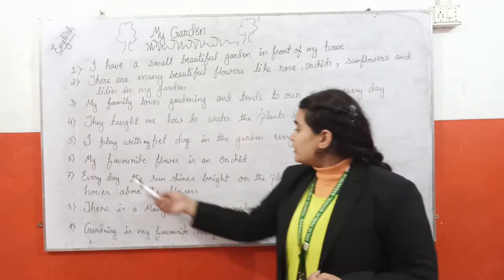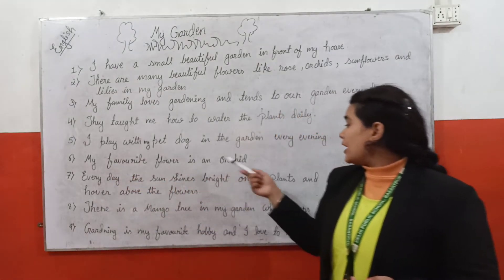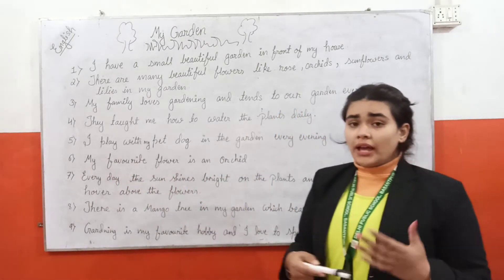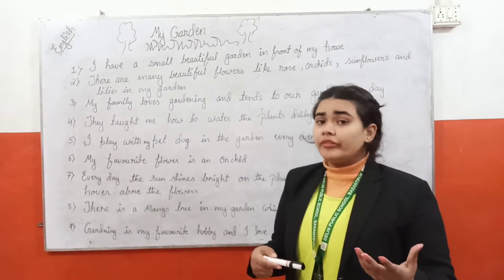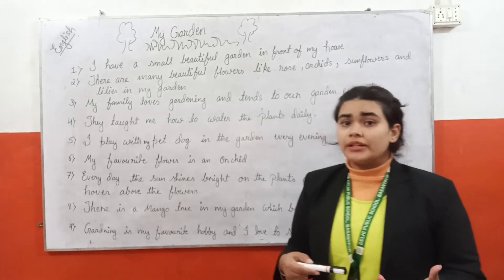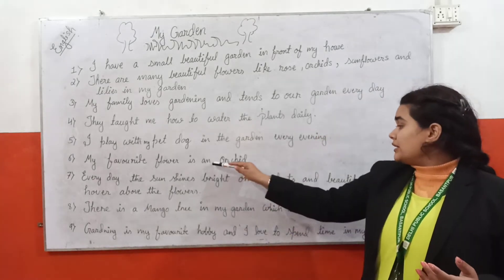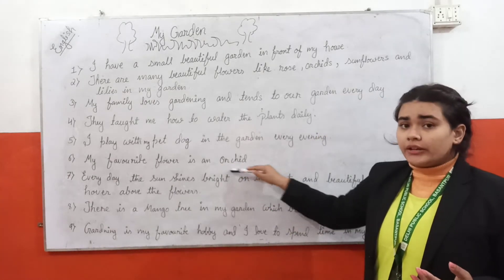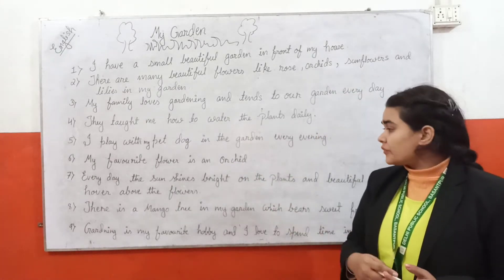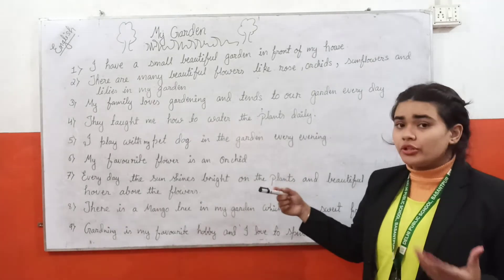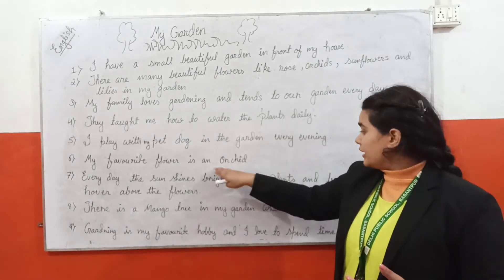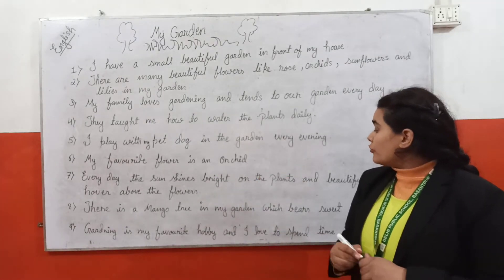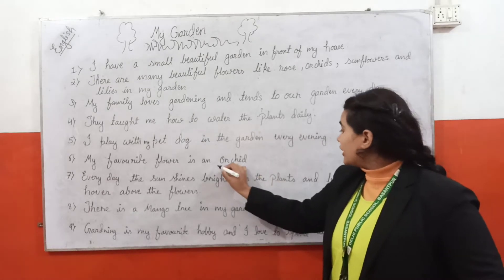Next one is: my favorite flower is an orchid. So students, if you have any other flower that is your favorite, you can write that instead of orchid here — whatever your favorite flower is, you can write it here.